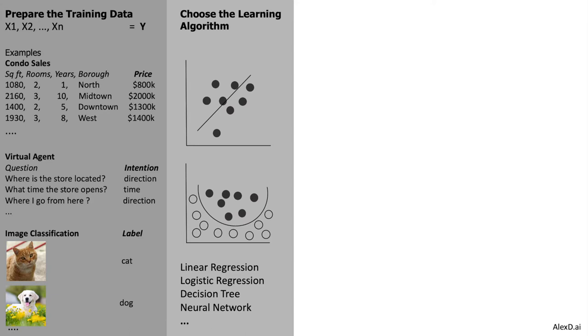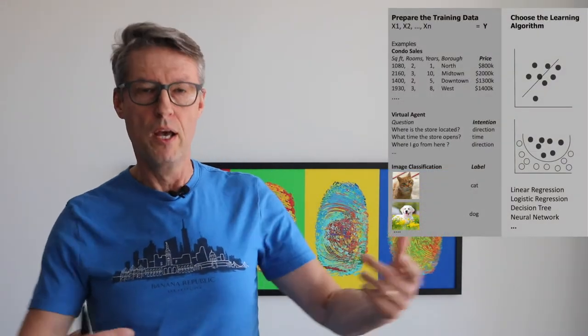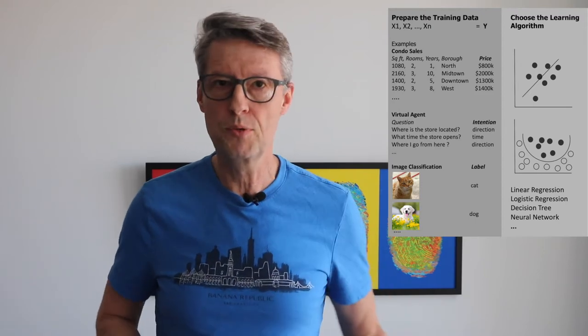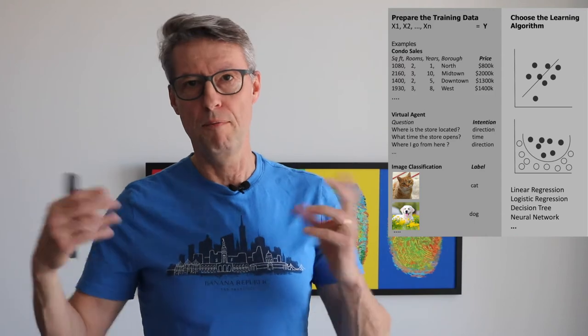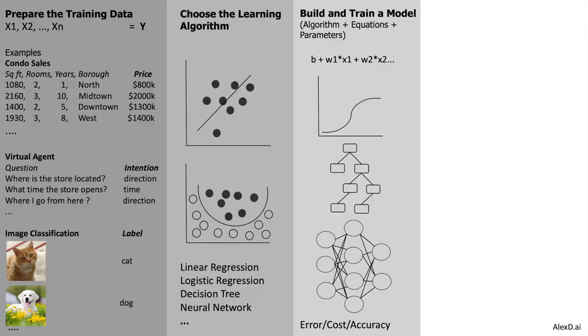A machine learning engineer chooses a learning algorithm. We have different algorithms: linear regression, which comes from statistics; logistic regression; decision trees; support vector machines; ensemble models like deep forest; and also neural networks, which can be shallow or deep. The engineer applies that algorithm on top of the training data to build a model. A model is a new algorithm with mathematical equations and parameters, and its form depends on the learning algorithm used. With linear regression, you get a big equation with weights; with a neural network, you get a graph structure.